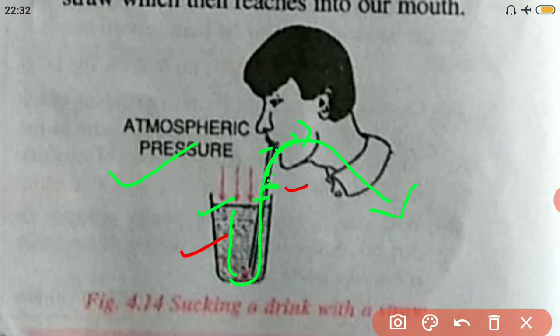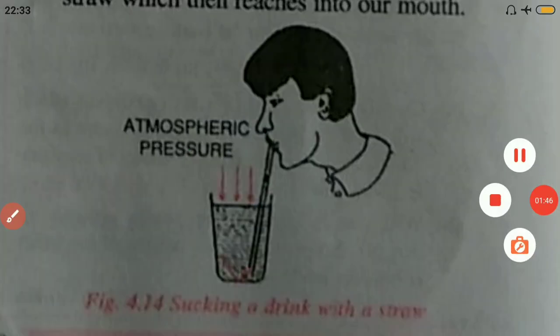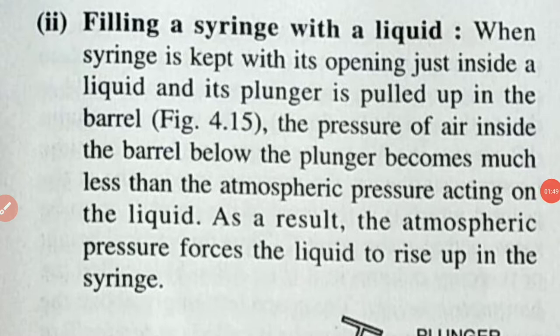The next consequence is filling a syringe with a liquid. When the syringe is kept with its opening just inside a liquid and the plunger is pulled up in the barrel, the pressure of air inside the barrel below the plunger becomes much less than the atmospheric pressure acting on the liquid. As a result, the atmospheric pressure forces the liquid to rise up into the syringe.